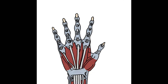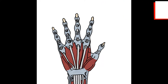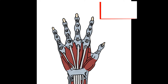For the muscles, there are two main groups: the extrinsic and intrinsic muscles. The extrinsic muscles come from the forearm, and the intrinsic muscles are within the hand. The intrinsic muscles are split into two groups as well: the thenar and the hypothenar muscles.